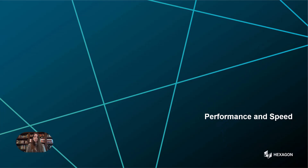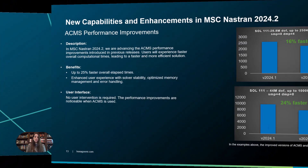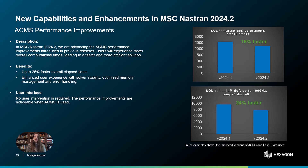Let's shift our focus to performance and speed, an area where MSC Nastran 2024.2 continues to deliver significant advancements to enhance efficiency and reduce simulation times. Building on previous enhancements, MSC Nastran 2024.2 delivers further ACMS performance improvements, enabling up to 25% faster overall computational times. These updates also enhance software stability, optimize memory management, and improve error handling to ensure a smoother and more efficient user experience.